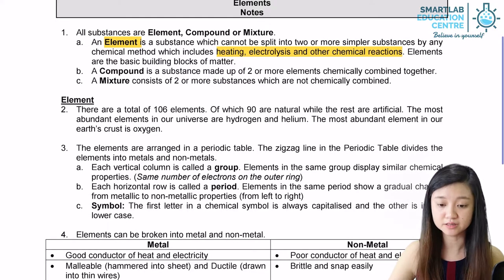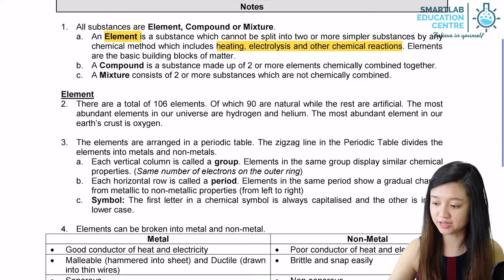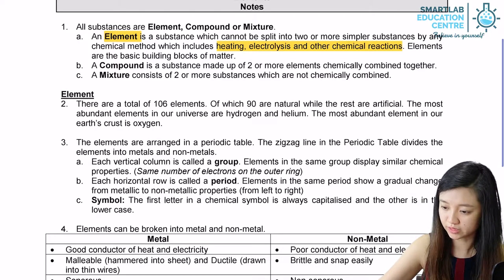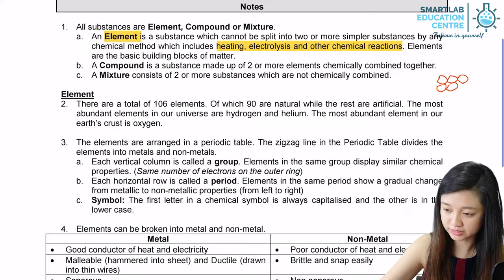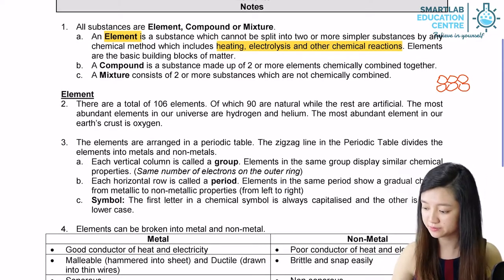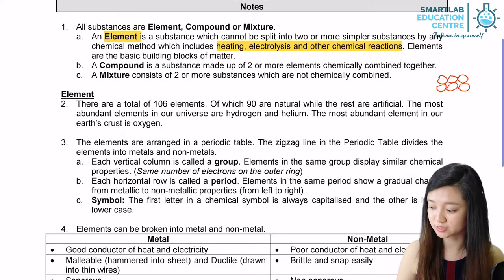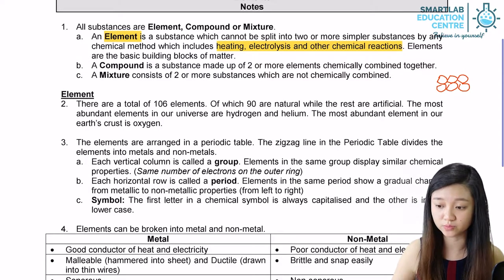Inside an element, all the atoms are the same. For example, the element called sodium — all the atoms look the same in sodium. We can see that all the atoms are the same, so we can therefore say that an element is a pure substance since it consists of only one type of substance.